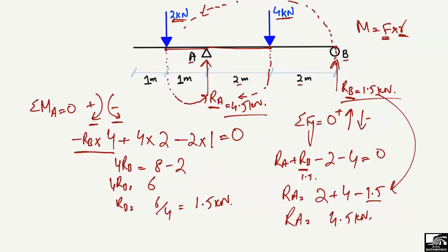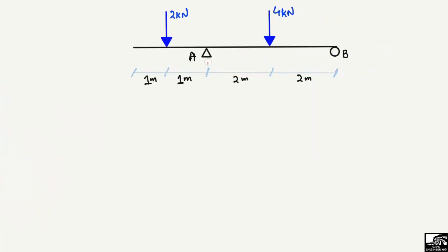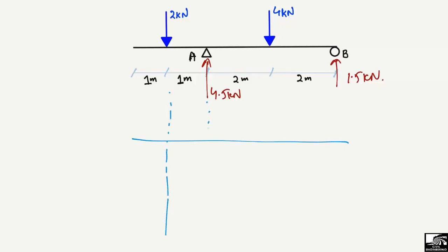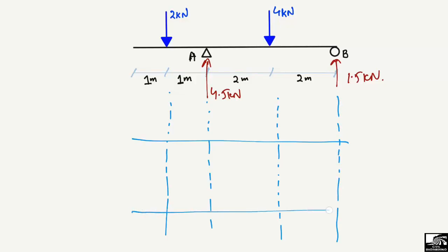Now the support reactions are known: RA is 4.5 kN and RB is 1.5 kN. We can now draw the reference lines for the shear force diagram and the bending moment diagram. The shear force is in units of kilonewtons and the bending moment is in kilonewton-meters. Starting from the free end of the beam.